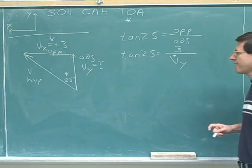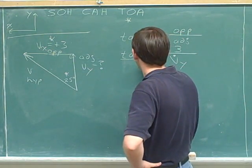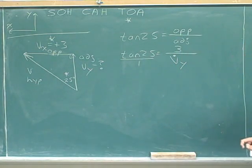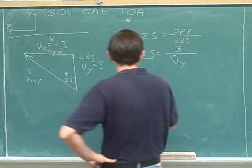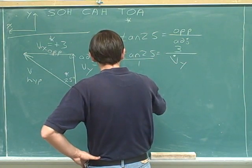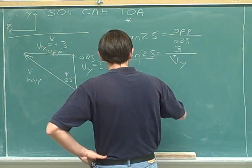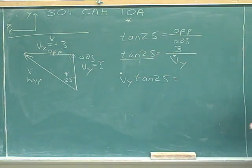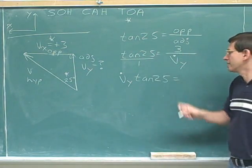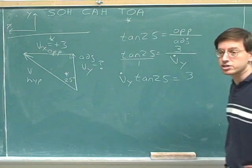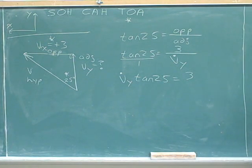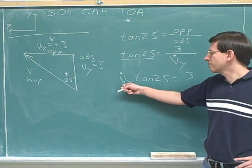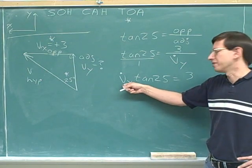Now, we need to get rid of the fractions by cross-multiplying. While multiplying diagonally in one direction, we would get v_y with a dot times the tangent of 25. And multiplying diagonally in the other direction, we have 1 times 3, which is 3. Now, we still have to get the v_y with a dot by itself.